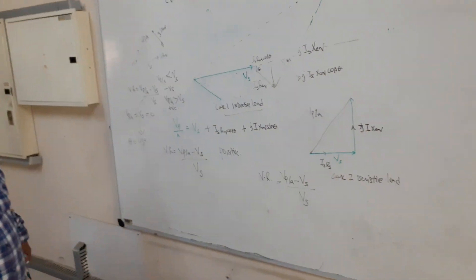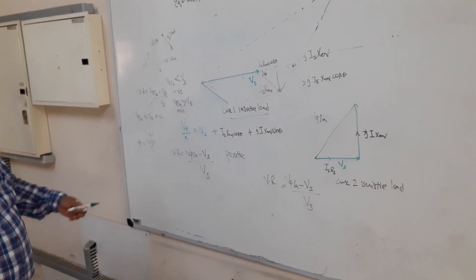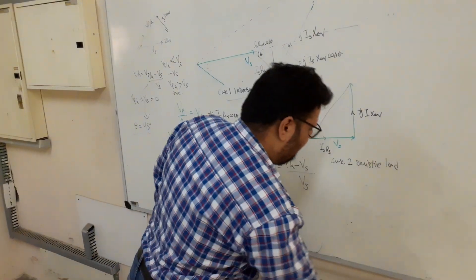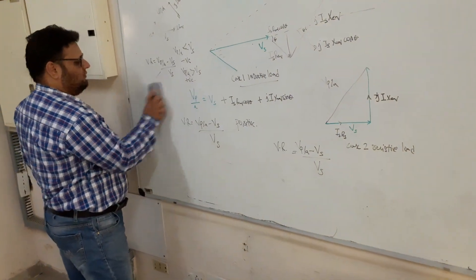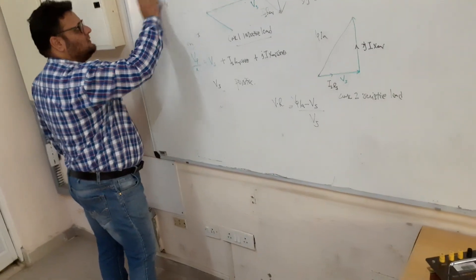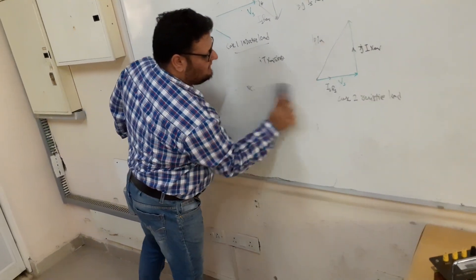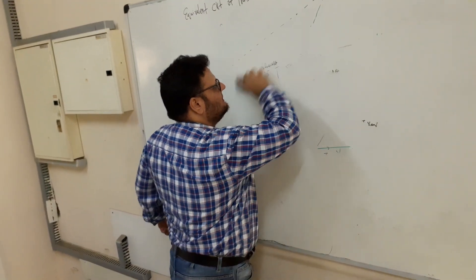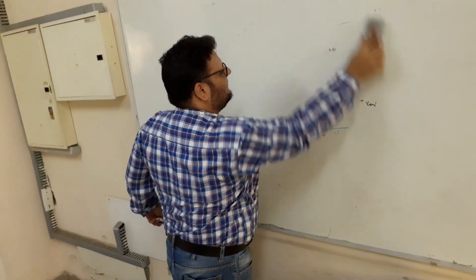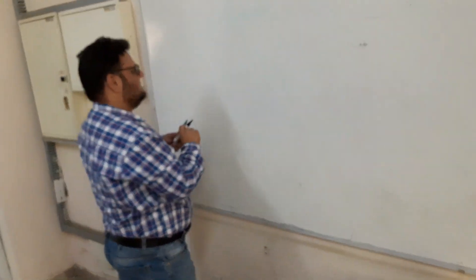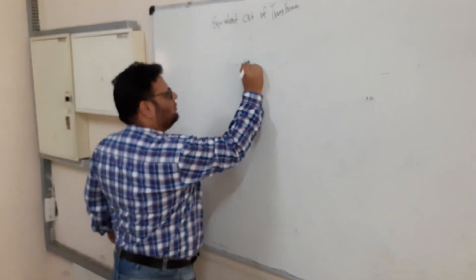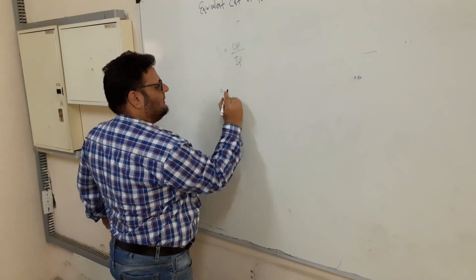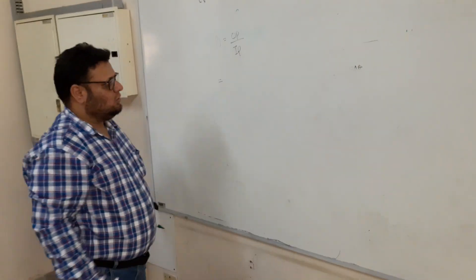This covers the phasor diagram regarding the transformer and voltage regulation. Now we will wind up with the efficiency of the transformer. The efficiency is given as output divided by input, as in any machine. So efficiency = output / input, where the input is output (KVA) plus losses.